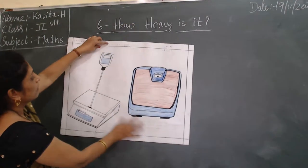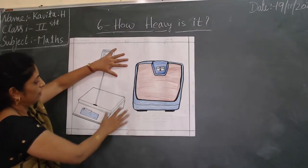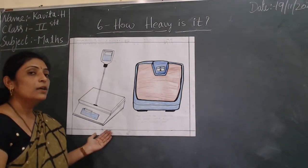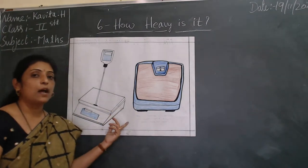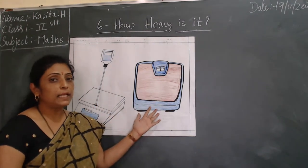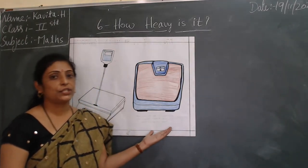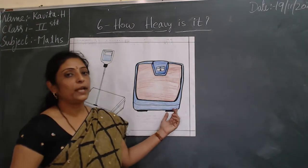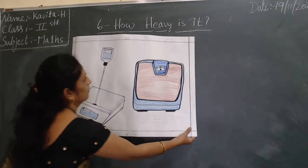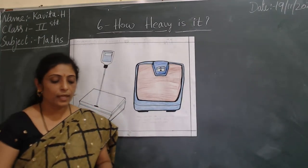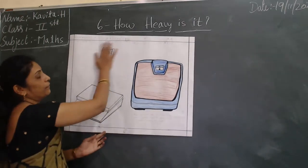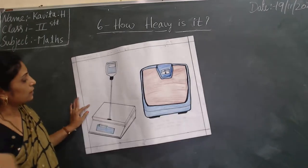Another type of machine we see in vegetable shops and fruit shops. Another machine is seen in big shopping shops like Big Bazaar. One more type can be seen in public places like bus stands, railway stations, and hospitals, where people measure their weight.